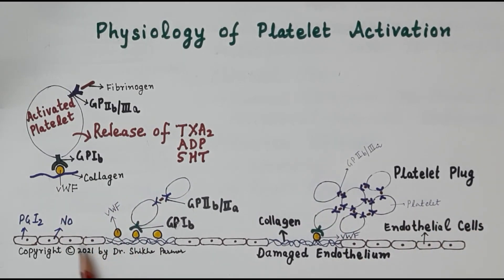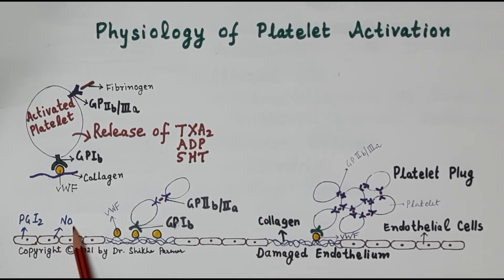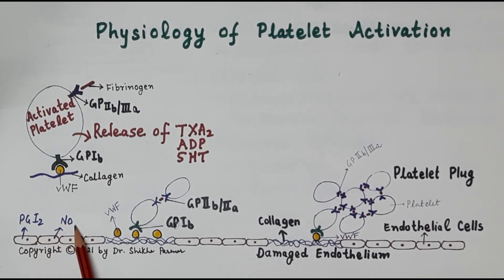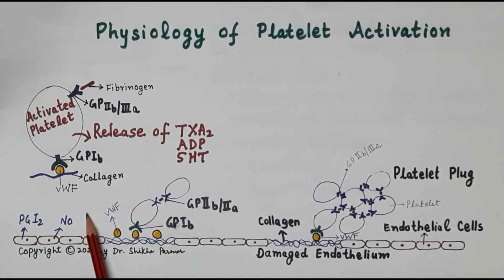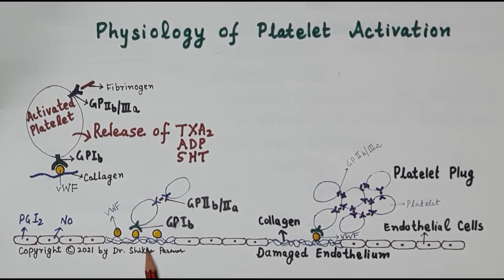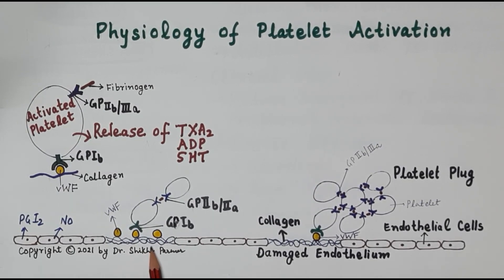Prostacyclin (PGI2) and nitric oxide are both very strong inhibitors of platelet aggregation and they also prevent activation of platelets. These are synthesized by the endothelium and released into the blood. Whenever there is damage to the endothelium, there is a fall in the synthesis of prostacyclin and nitric oxide, because of which platelets become activated.